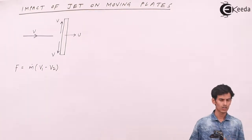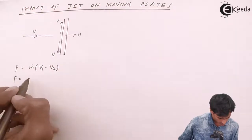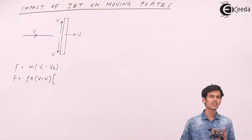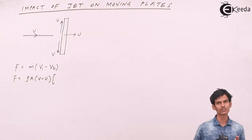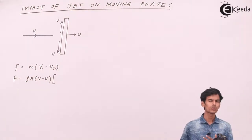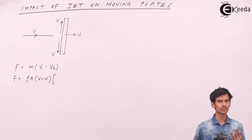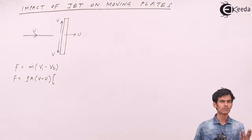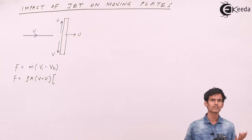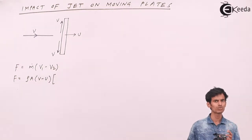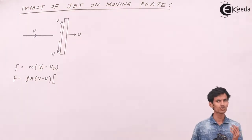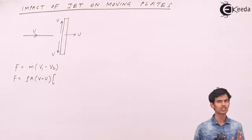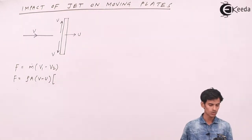M can be written as ρAV. Here we have to consider the relative velocity, since the jet is also moving and the plate is also moving. You cannot take the absolute velocity of the jet — you have to consider the relative velocity, which is V minus U. This relative velocity is what you use in the case of moving plates.